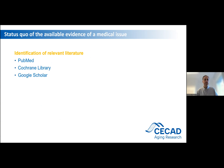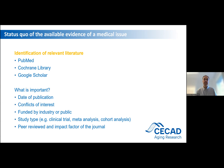The identification of relevant literature is one of the major steps to quantify the evidence. Therefore, several literature databases are available. Most importantly, PubMed and the Cochrane Library, as well as Google Scholar in some cases. What is important when you screen the databases for relevant literature? You should be aware of the date of publication — is the study up to date? Are conflicts of interest stated by the authors highlighted? Is the study funded by industry or public? Which study type is presented — is it a clinical trial, a meta-analysis, or a cohort analysis? And was the study peer-reviewed, and what is the impact factor of the journal?